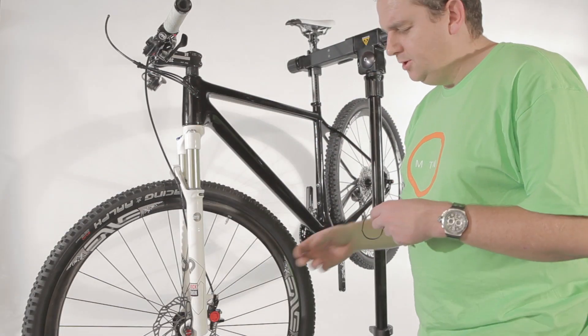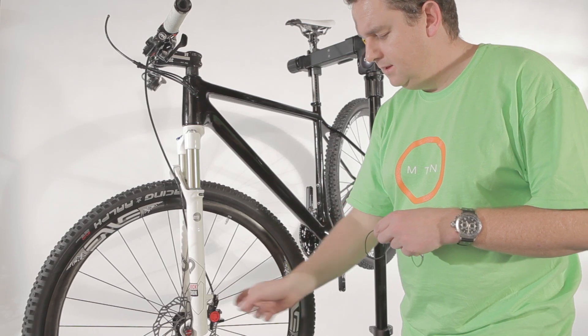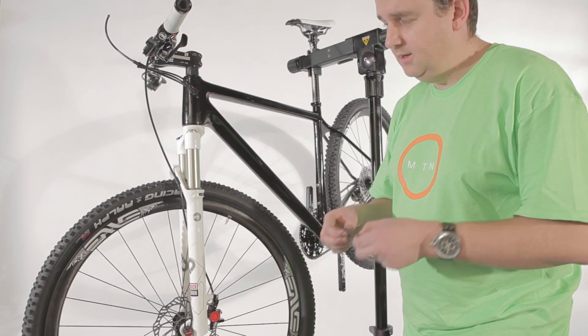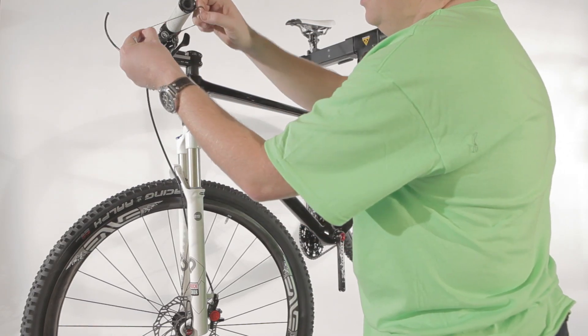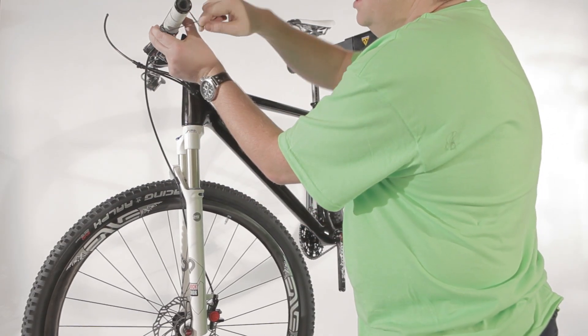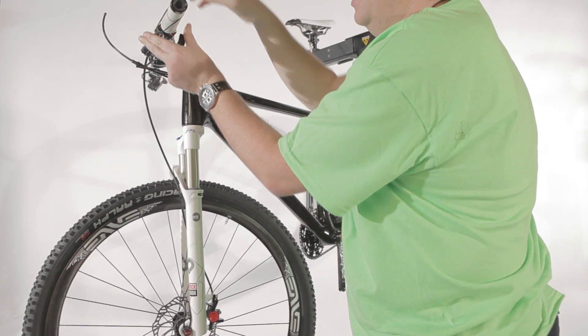We're now going to make sure that the caliper is properly aligned with the rotor. There's a simple trick to do that actually. It's to use a simple rubber band and you put it over the lever and the handlebar, just to make sure that the lever is more or less like in braking motion.